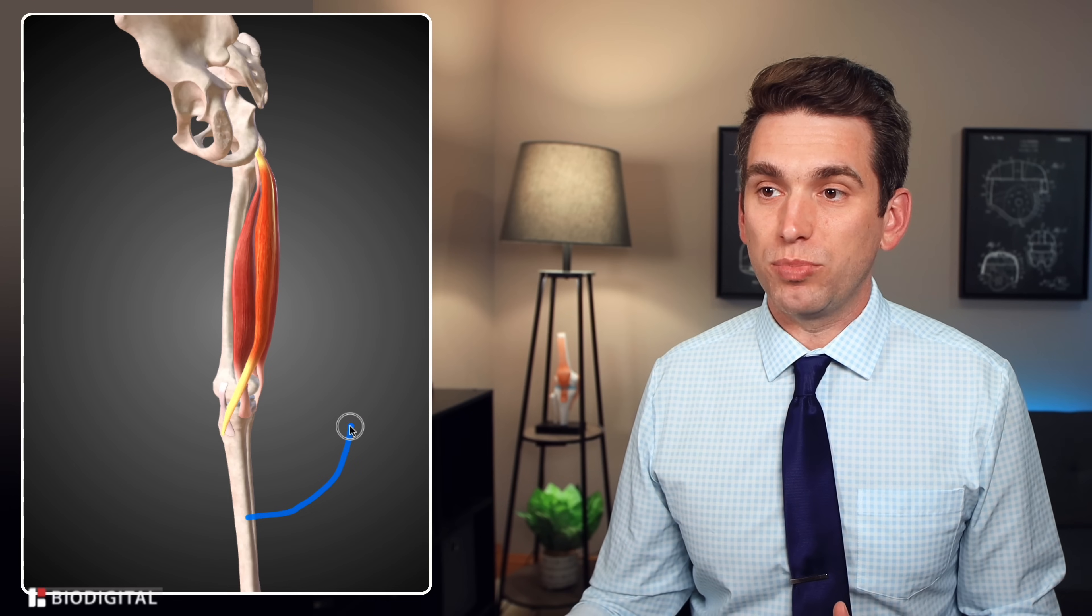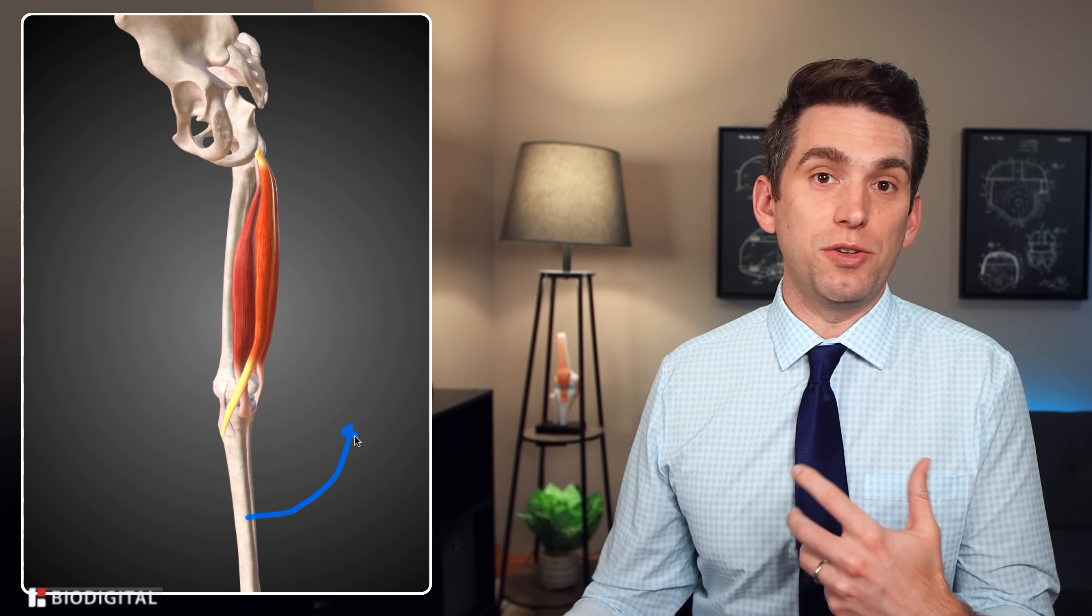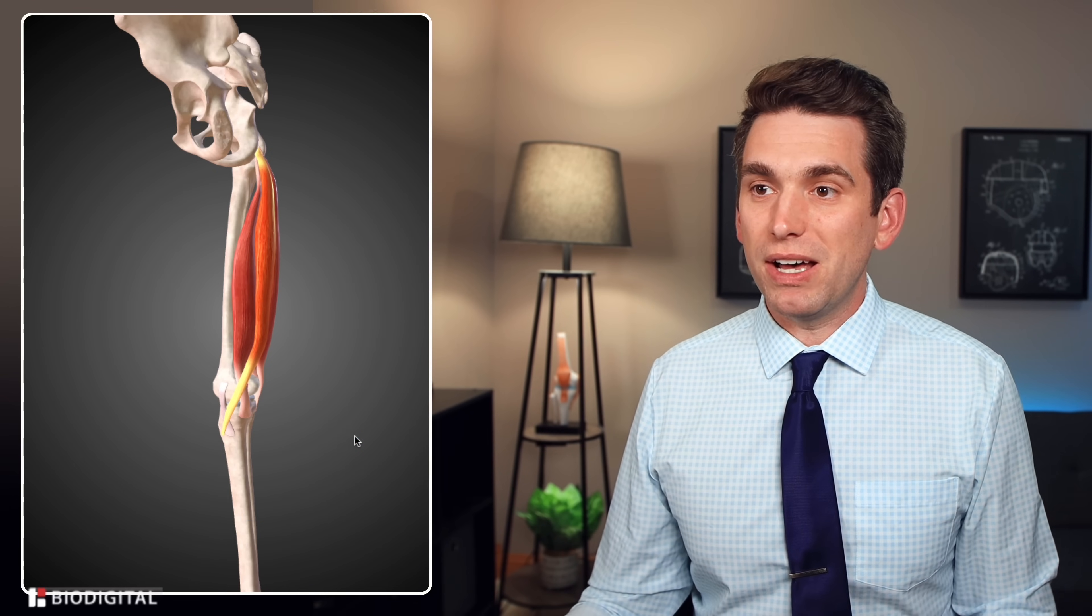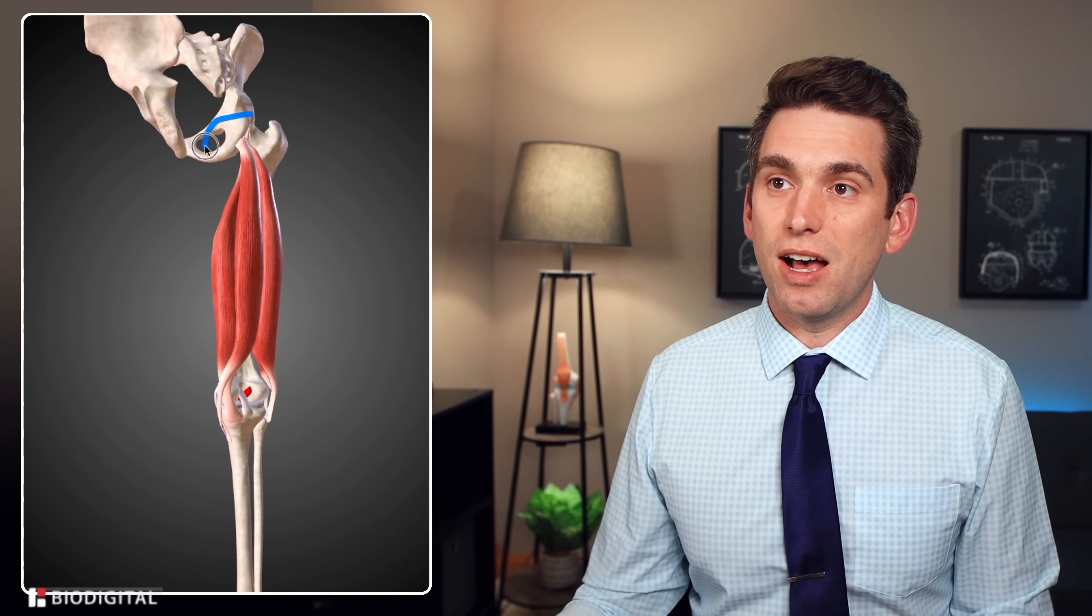And then focusing on just the hamstring muscles first with our biodigital anatomy tool here of course the hamstring is a group of muscles that sit on the back or the posterior thigh the primary action of the hamstring muscles is knee flexion so bringing the knee up behind you like you're going to do a butt kicker exercise.